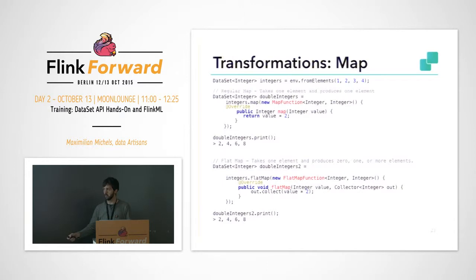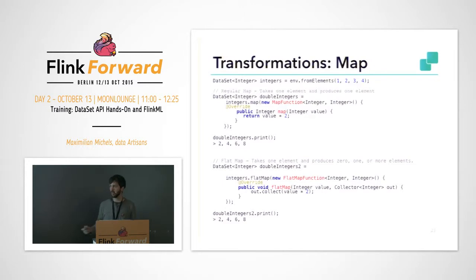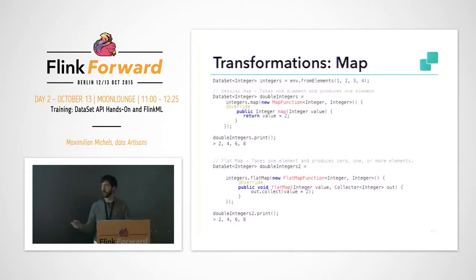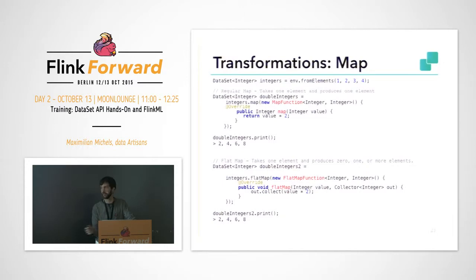You can do the same thing with the flatMap function, but you use a collector which lets you output zero, one, or multiple elements. It's a bit more powerful because you may also output the value twice if you want. This is like the traditional map, which is also how it is in Hadoop, and the flatMap is a bit more advanced.